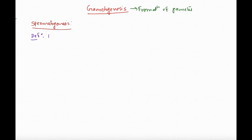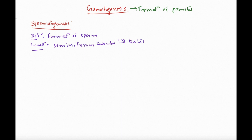What is spermatogenesis? Simple definition: formation of sperm. Where does this happen? It occurs in the seminiferous tubules, which are present in the testes. So spermatogenesis — formation of sperm — location: seminiferous tubules in the testes in males. Now let's see how exactly the formation of sperm occurs.